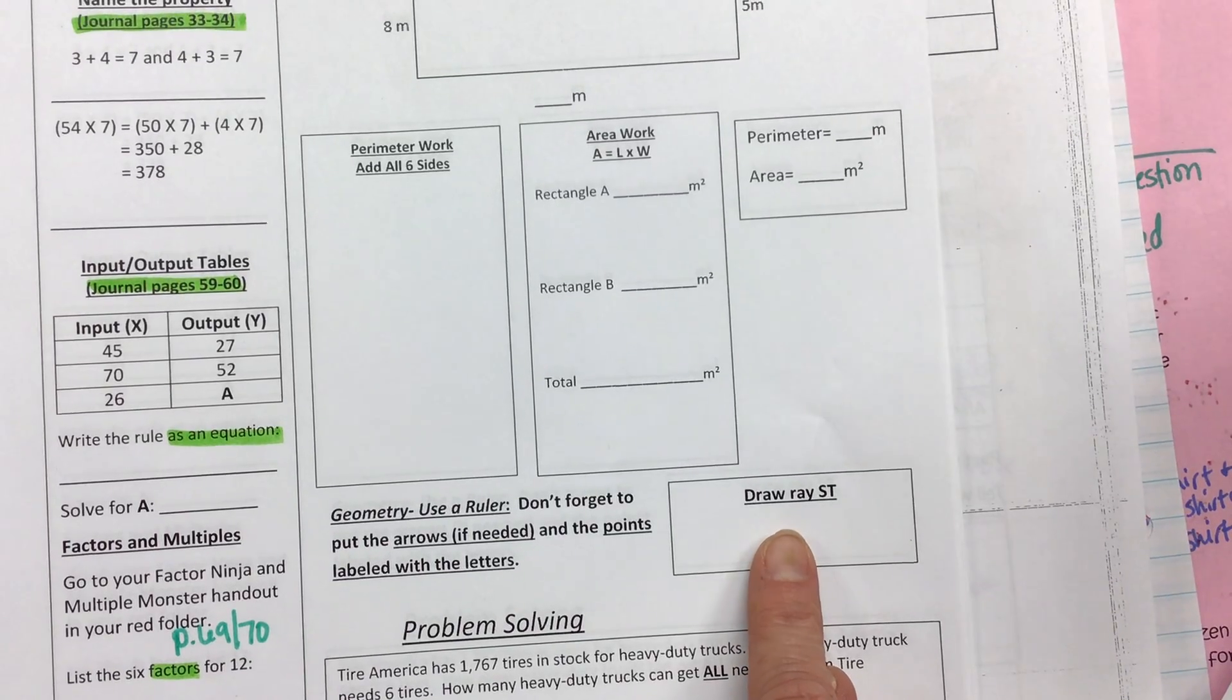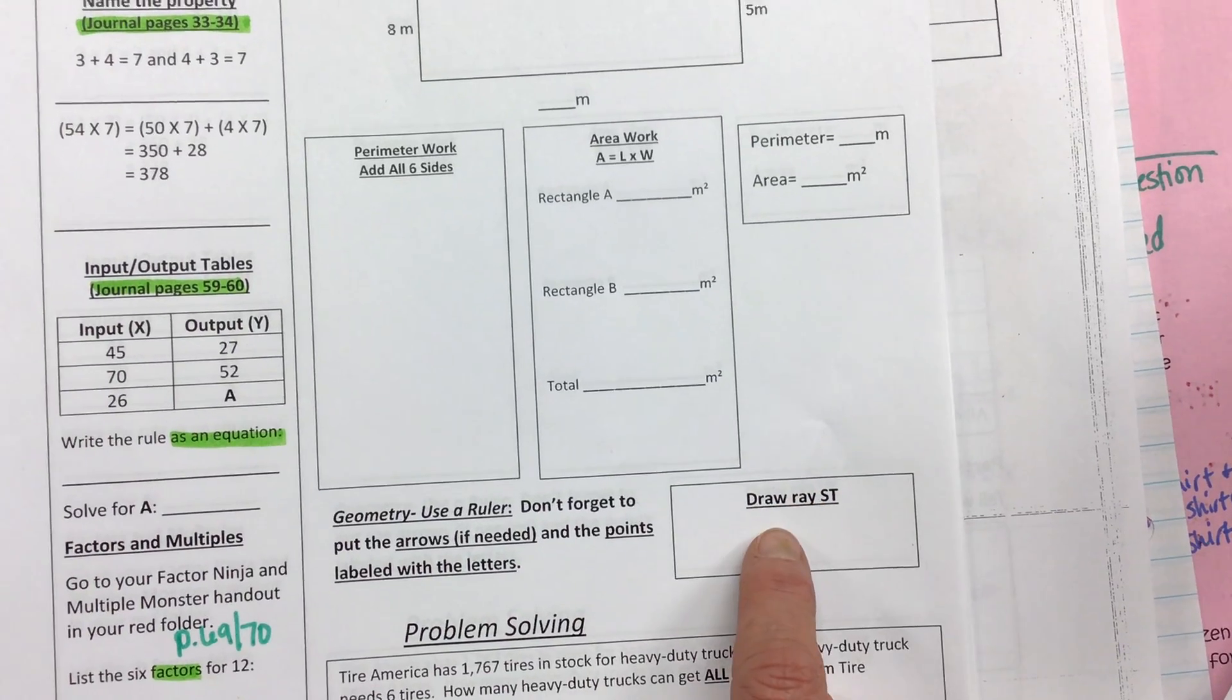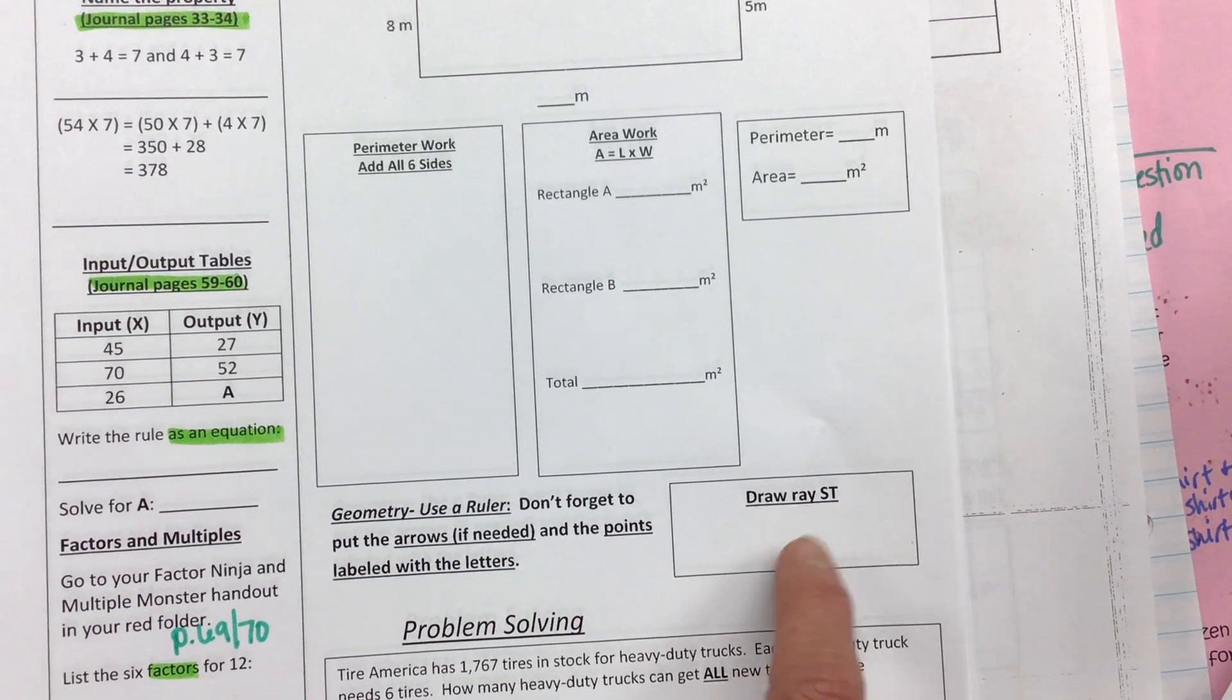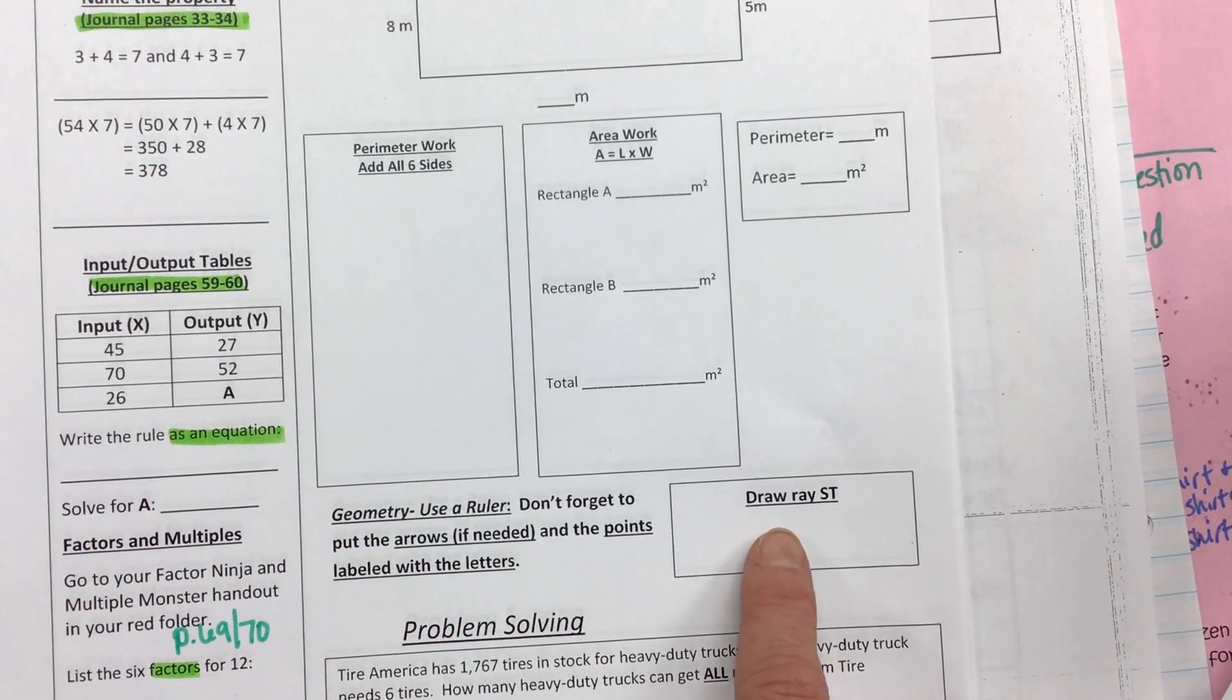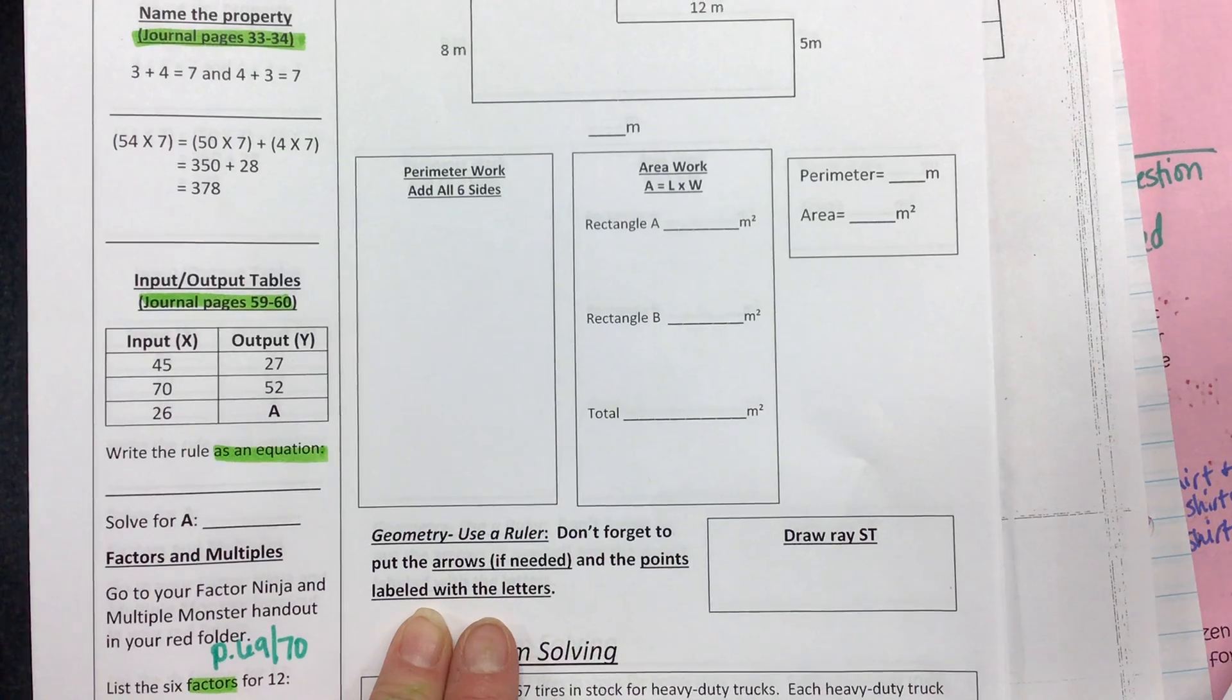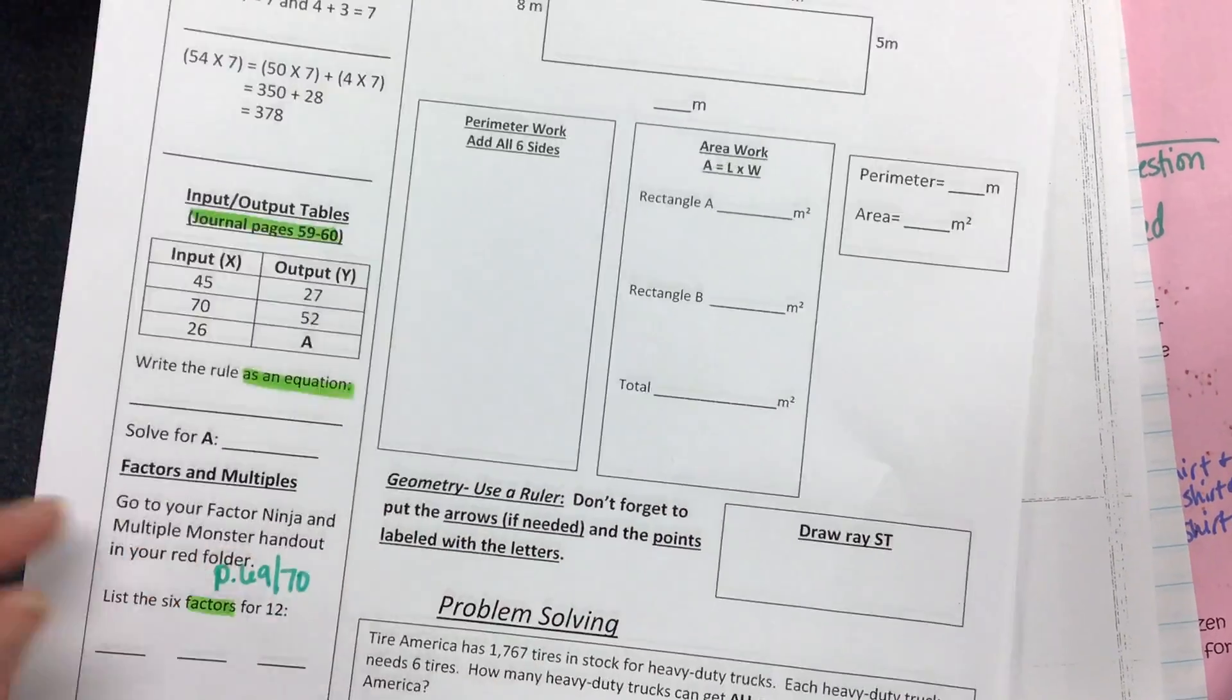Draw a ray ST. You need to use a ruler. You need to have an arrow. It needs a point. It needs two points. You cannot have letters without points. You'll need to go back to that blue sheet that should be in your red math folder to see an example of a ray. We'll see if there's one in the tray for you.